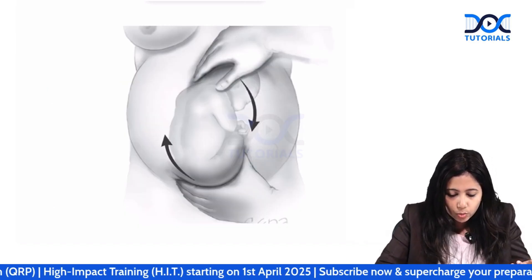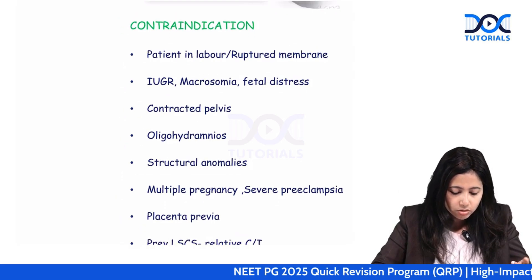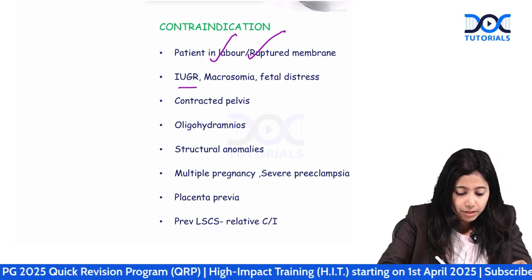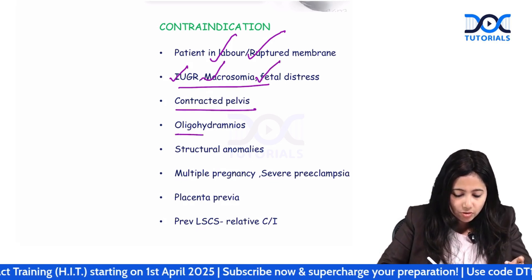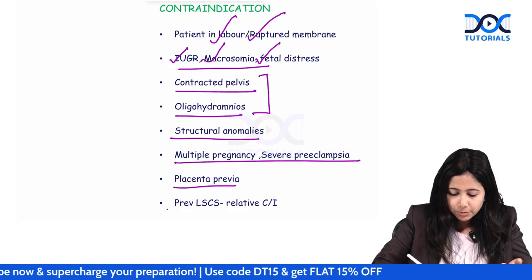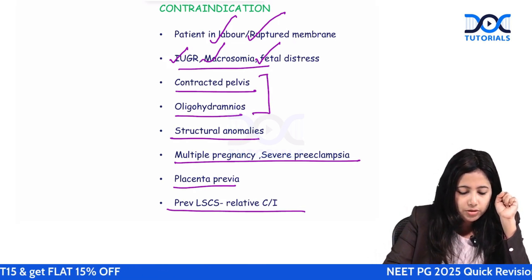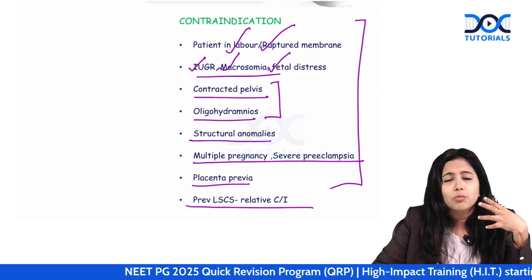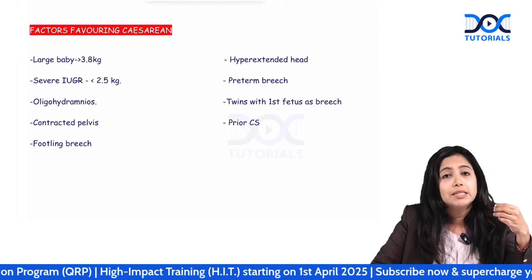ECV is usually performed at 37 weeks. Contraindications to ECV include: patient in labour, ruptured membranes, big baby, IUGR, macrosomia, fetal distress, contracted pelvis, oligohydramnios, structural problems of the uterus, placenta previa, multiple pregnancy, and previous cesarean section — though previous cesarean is only a relative contraindication. If there are contraindications for vaginal delivery, the final management is cesarean section.